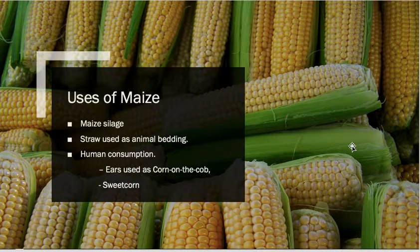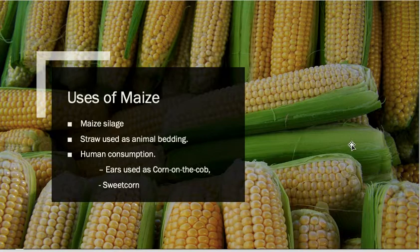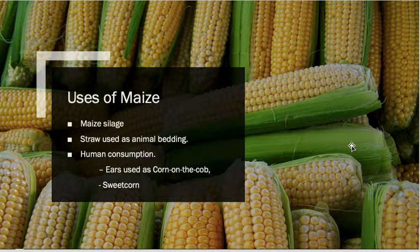Now the uses of maize. The biggest use in Ireland by far is for silage. The maize straw can also be used for bedding for animals, and then the grain can be used for human consumption — so you have your corn on the cob and your sweet corn.